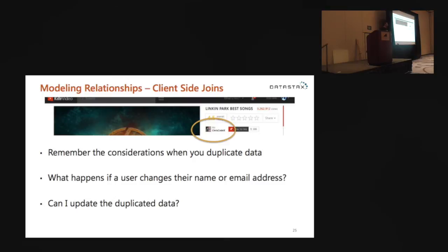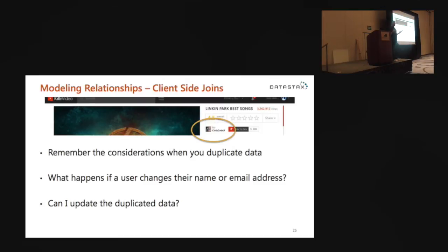Just to reiterate: remember the considerations when you duplicate data. If I go with either of those scenarios where I duplicate user information into another table, what happens if a user changes their name or email address? I'm probably going to want to update that data on the videos page. How likely are they to change their name and email? How frequently will that happen? And do I have all the information I need to update those duplicate copies?